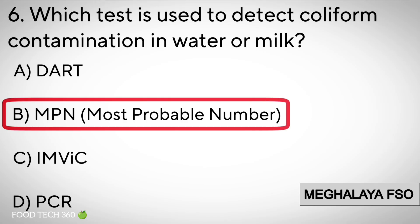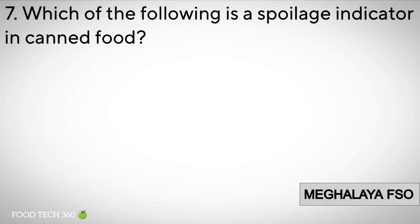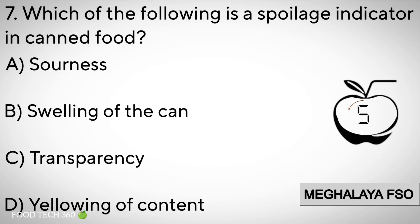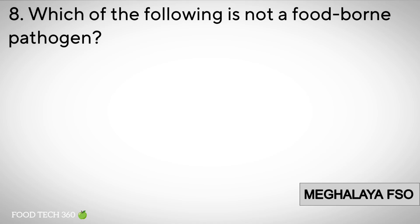Question number 7: Which of the following is a spoilage indicator in canned food? Options: A. Sourness. B. Swelling of cans. C. Transparency. D. Yellowing of content. Correct answer: B. Swelling of the can.